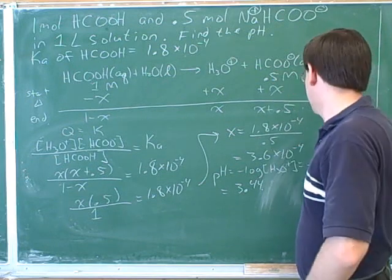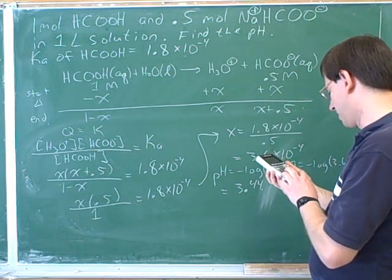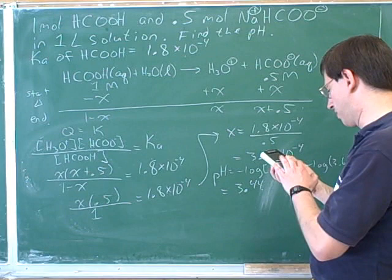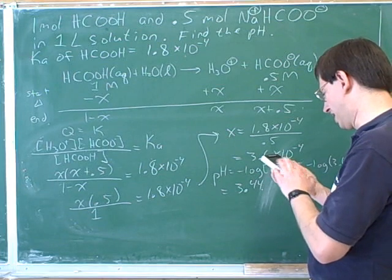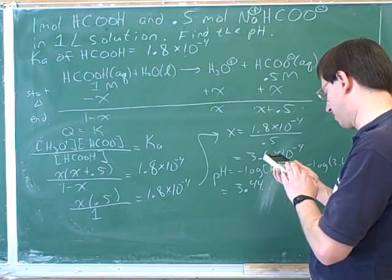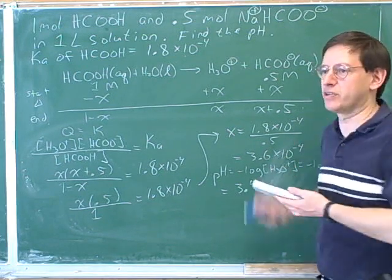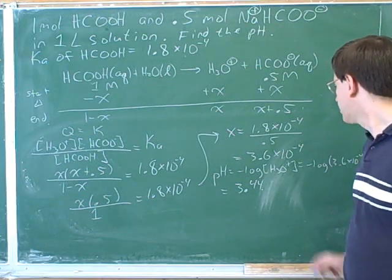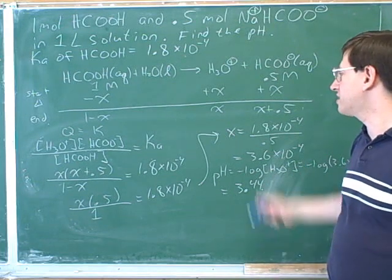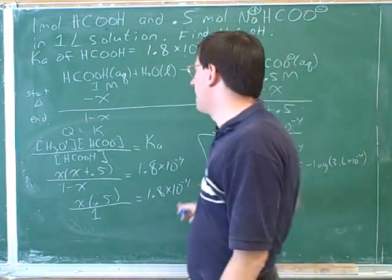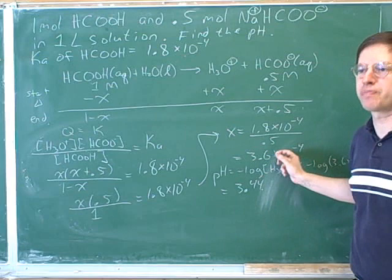Does it satisfy the 5% rule? Yes — 3.6 times 10 to the negative 4 divided by 0.5 is not even close: it's about 0.07%, less than 1%. So this number is less than 1% of 0.5. Usually it's safe to make this approximation if x is 5% or less of the starting amount, and here it definitely was less. You can't tell whether it's going to be less until you've solved the problem — then you check it at the end.